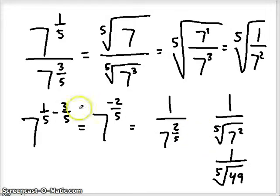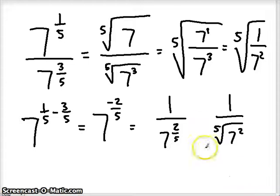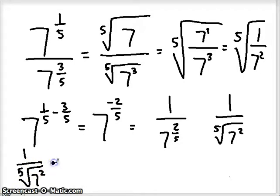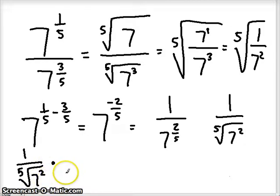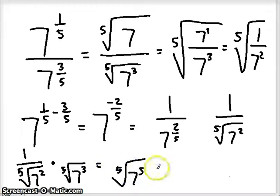We need to get rid of that radical in the denominator position. Starting back at 1 over the 5th root of 7 squared — in order to get rid of a 5th root, we need our exponent to be to the 5th power to cancel the 5th root. Since we have 7 squared, if we multiply top and bottom by 7 to the 3rd, we end up with the 5th root of 7 to the 5th power in the denominator, which just gives us 7. So we got rid of the radical on the bottom.